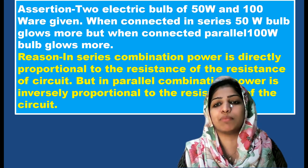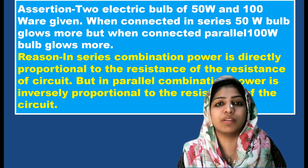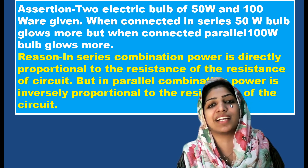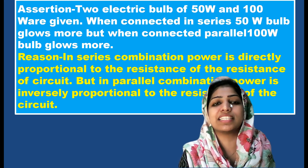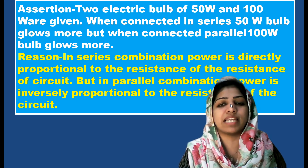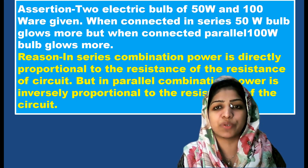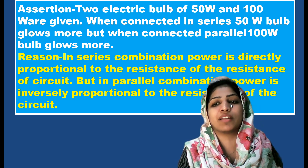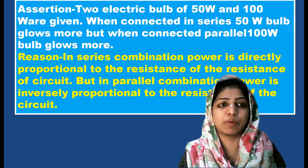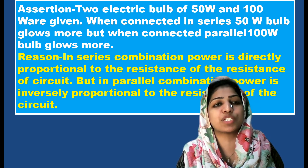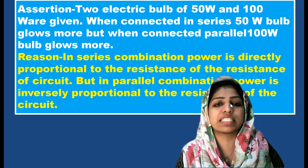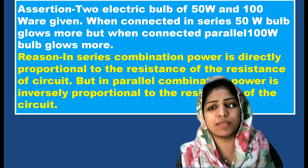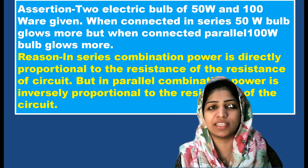Both assertion and reason are true. In series, power is directly proportional to resistance; in parallel, power is inversely proportional to resistance. The reason correctly explains the assertion, so the answer is option A.